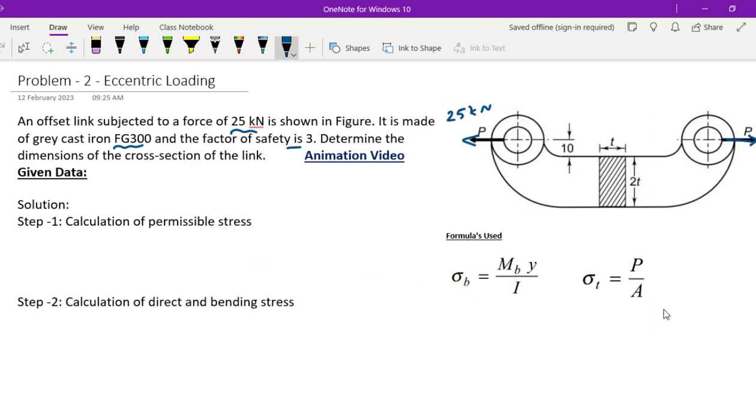Now we can see the 3D model. So this is the neutral axis position. If we calculate the moment, it's force into perpendicular distance. So force P into perpendicular distance, this is 10mm plus this distance. The total is 2T. So it's 10 plus T, the total distance. Force into perpendicular distance.